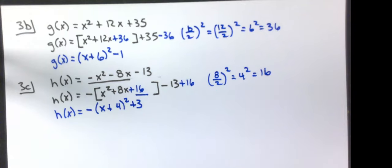In summary, for vertex form you need to be able to find an equation given a vertex and a point, graph a function in vertex form, and convert from standard form to vertex form by completing the square.